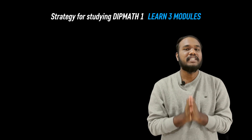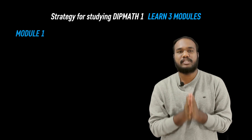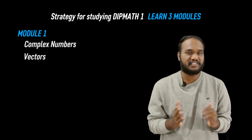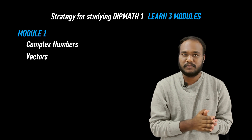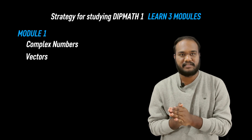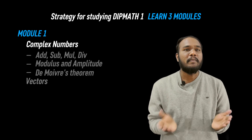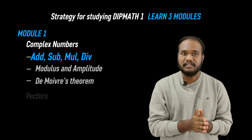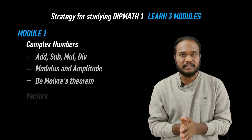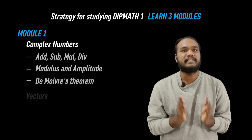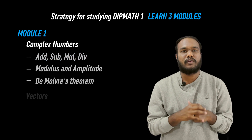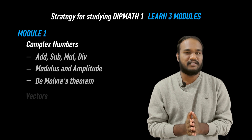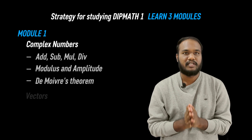The first one is obviously the first module. The first module has two sections: complex numbers and vectors. In complex numbers, you need to learn addition, subtraction, multiplication, and division of complex numbers. This is very basic stuff and you can learn it very easily.